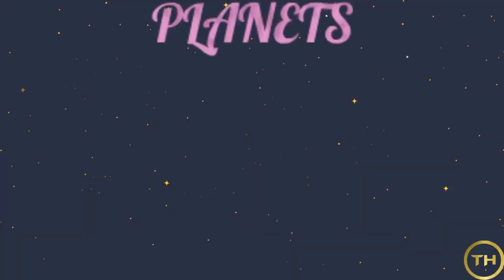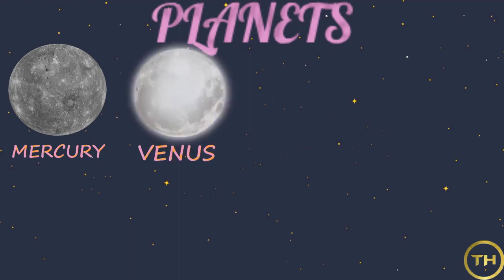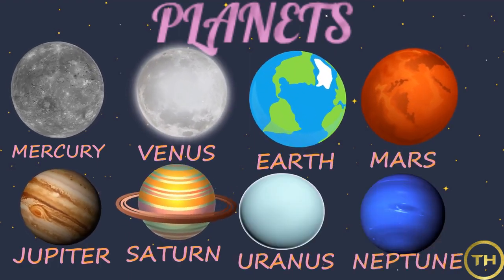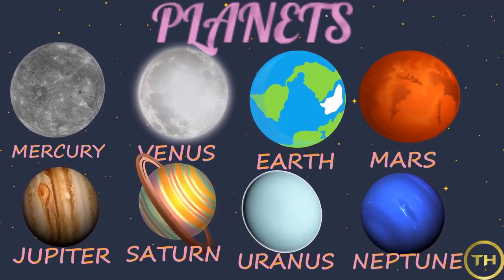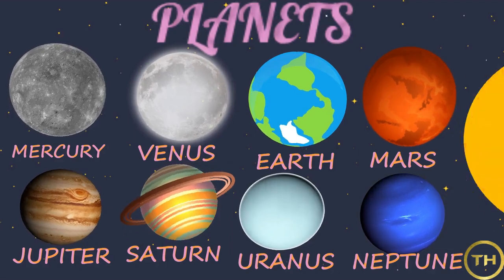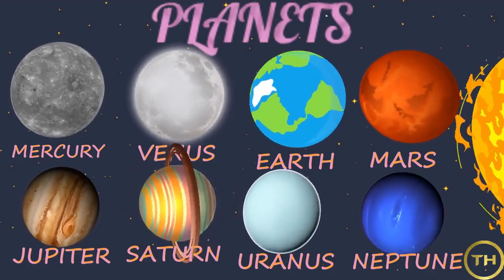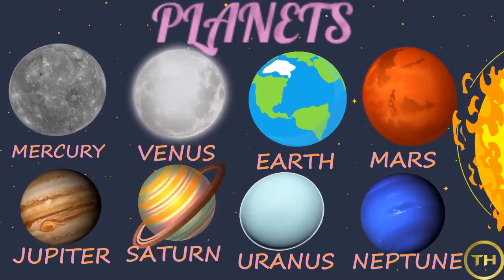Next, we learn about planets. The heavenly bodies that do not twinkle are called planets. Planets do not have light of their own. They get light from the sun. Planets revolve around the sun.